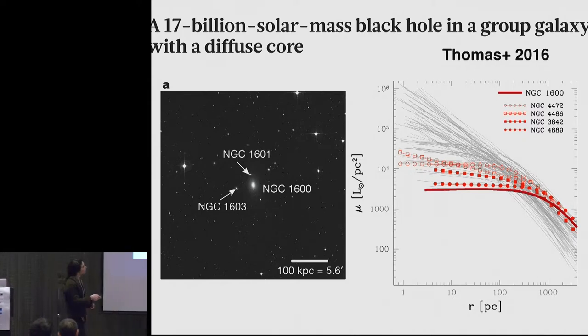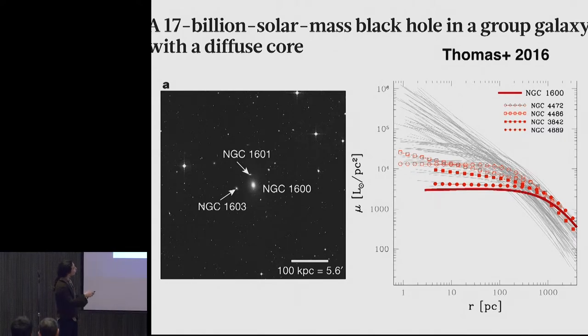We think it has a 17 billion solar mass black hole based on the motions of stars at the center. And what you see, I'm showing you the light profiles of a whole bunch of massive galaxies.